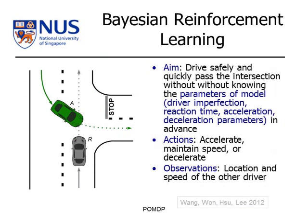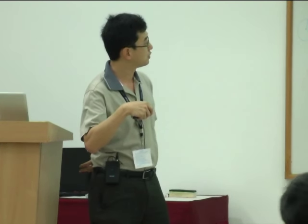Bayesian reinforcement learning would be one possible use of POMDP. In this particular example, what we want to do is drive the car safely past an intersection without really knowing a lot of the parameters of the other driver — like driver imperfection, reaction time, acceleration, and deceleration parameters — which could model things like the driver could be drunk or driving erratically. The actions at every time step are to accelerate, maintain speed, or decelerate, and the observations include the location and speed of the other driver.